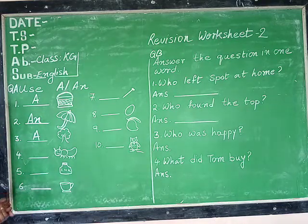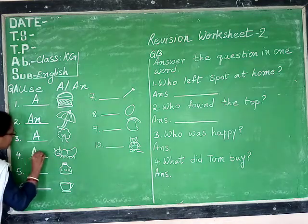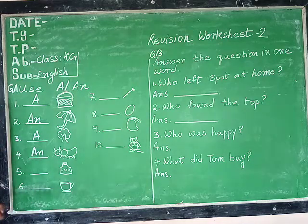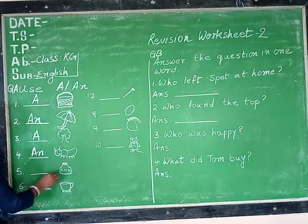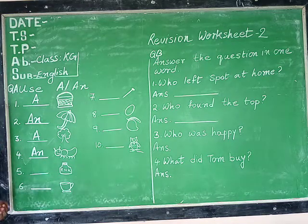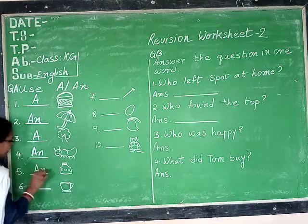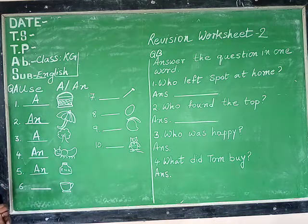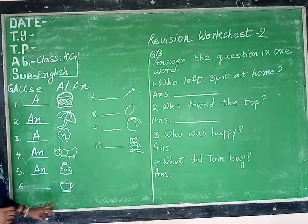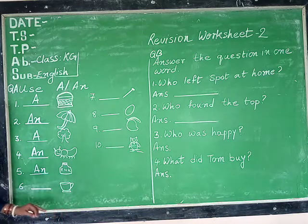Next comes ant — 'an ant.' So let us write 'an ant.' Next comes ink pot — it is 'an ink pot,' so we write 'an ink pot.' Next comes cup — so it is 'a cup' or 'an cup'? Yes, it is 'a cup.'